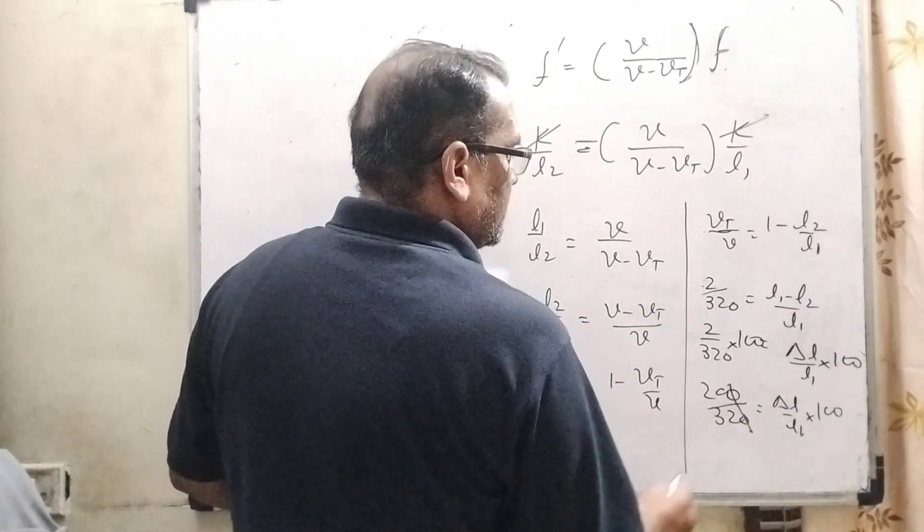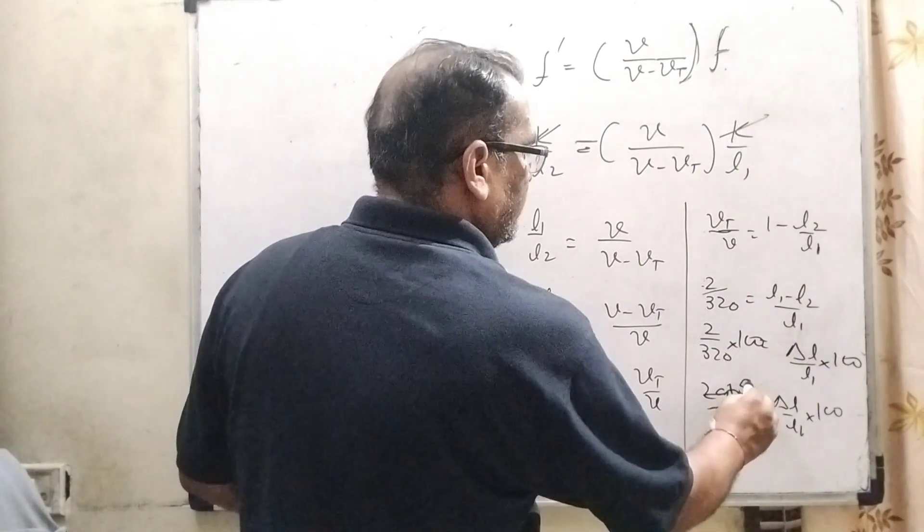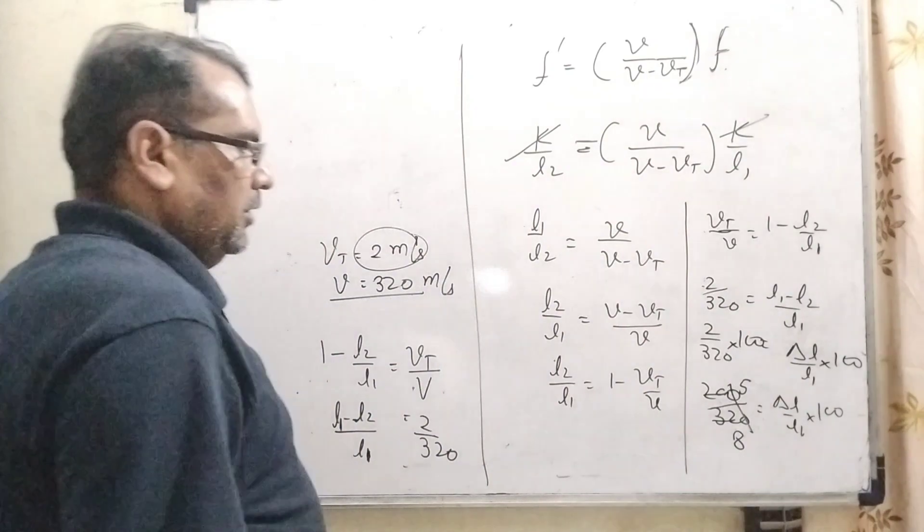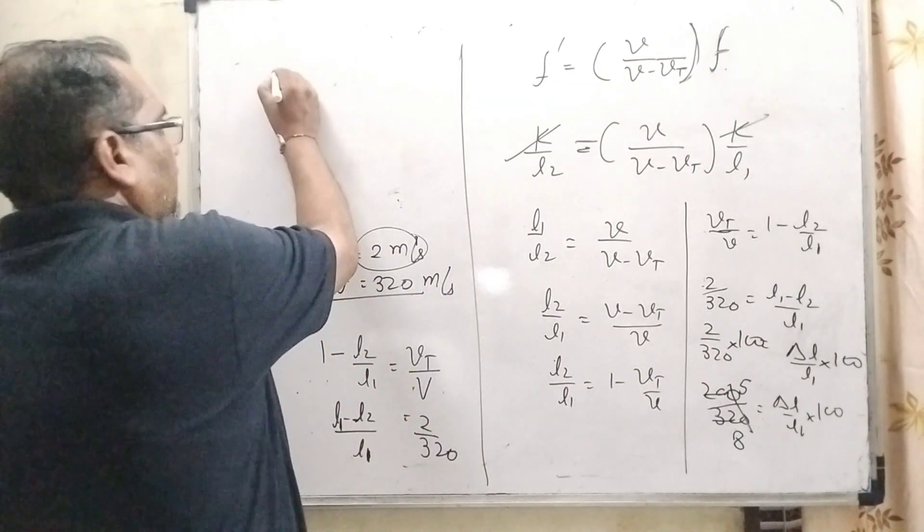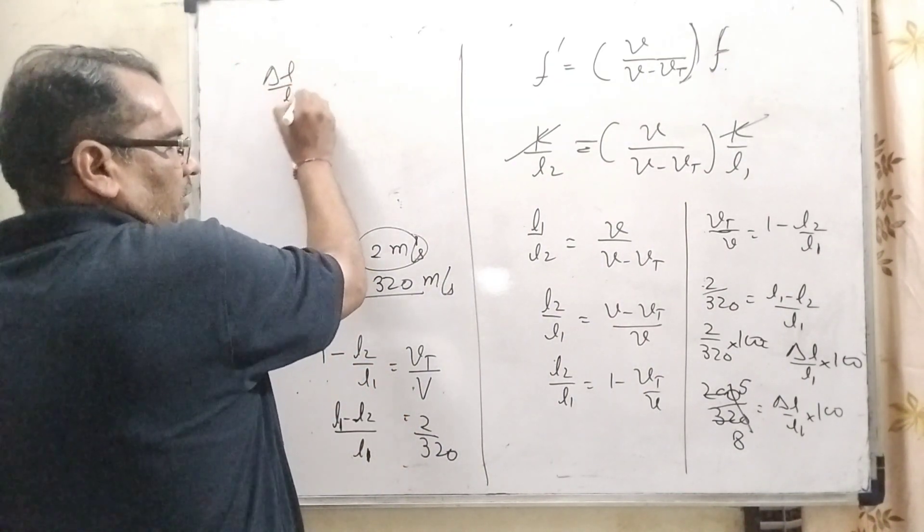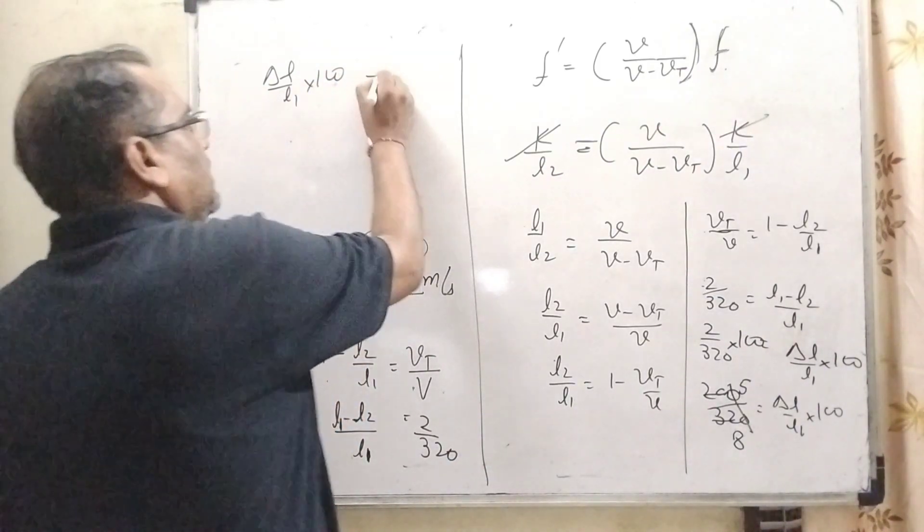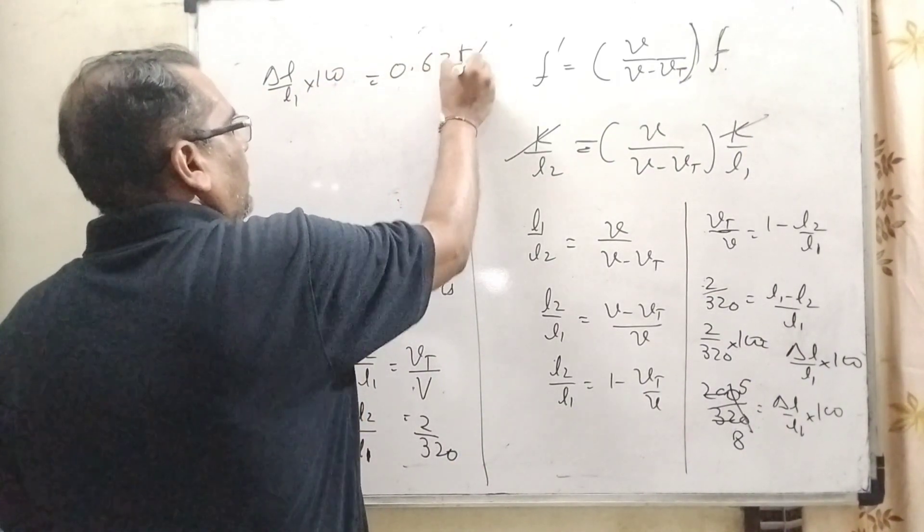Now this zero will be cancelled. 4 by 20, 4 by 32. Then 5 by 8. Delta L upon L1 times 100. 5 by 8 can be written as 0.625.